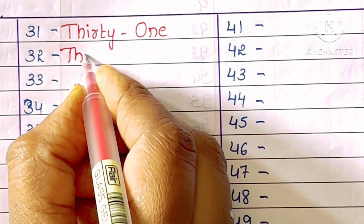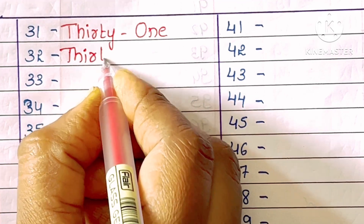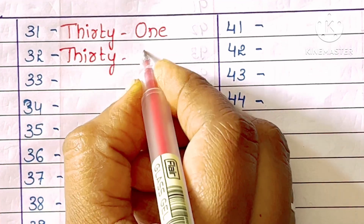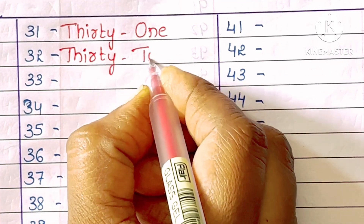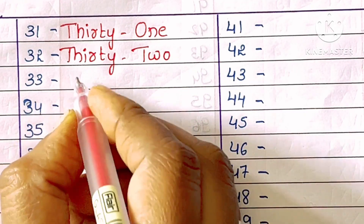32. T-H-I-R-T-Y-T-W-O. Thirty-two. 33. Thirty-three.